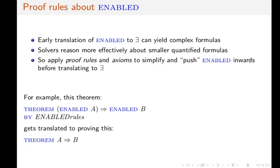And we can transform this theorem using the proof directive ENABLEDrules to the theorem A implies B. Now, if the prover successfully proves this theorem, it has proved the first theorem about ENABLED.